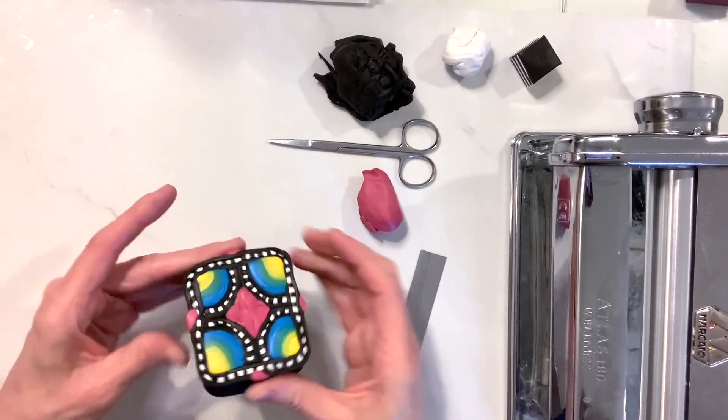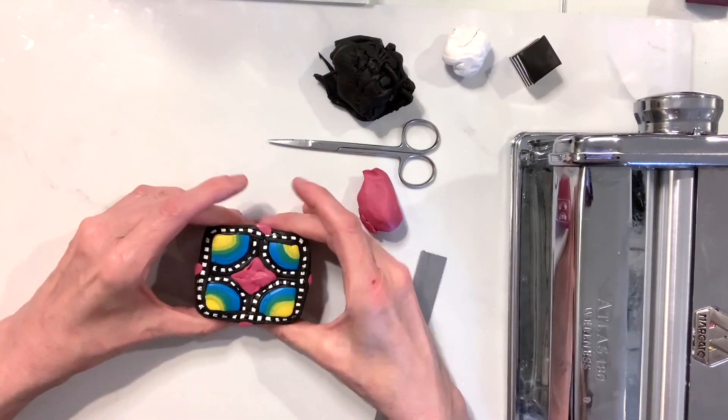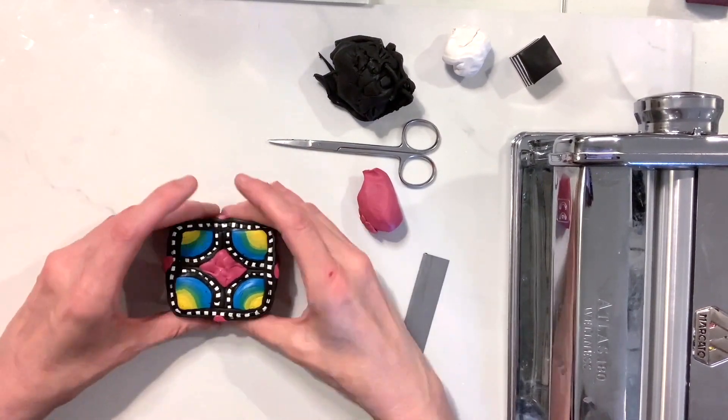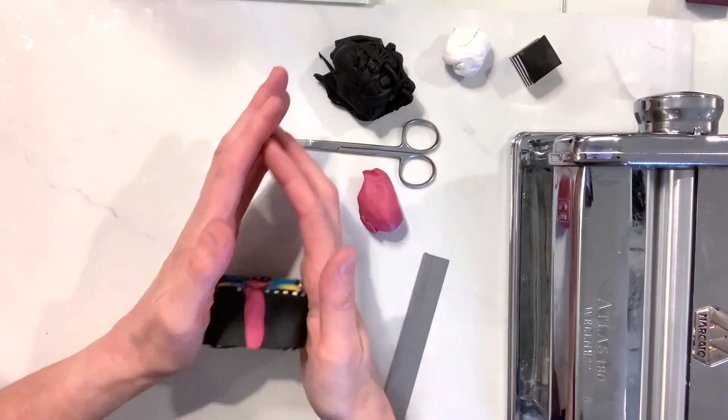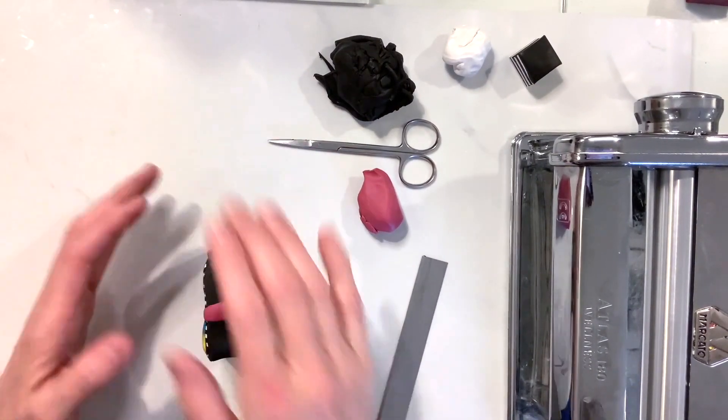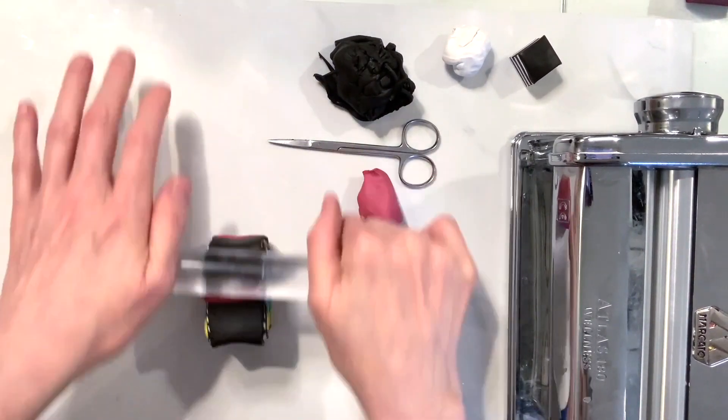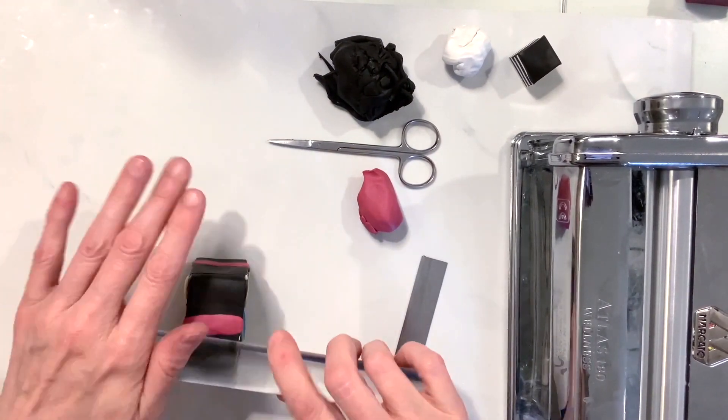So press evenly on all four sides as you go around. It's starting to get a little bit of a barbell look, not much. Then bring in your acrylic roller, and again, if you're going to do a couple of passes with your acrylic roller, make sure you do it on each side evenly as much as possible.